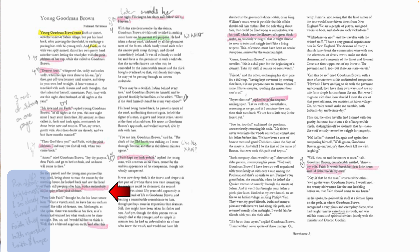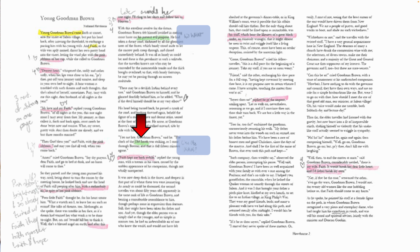She highlights in green other things — short phrases that raised questions for her. So 'his present evil purpose' — Young Goodman Brown's present evil purpose — and she wrote off to the side 'his what?' And then a little further down there's the phrase 'Old South,' which really puzzled her, so she wrote 'like the KKK?' The answer is no, that's not what Hawthorne meant, but I really like that she's engaging with the text, asking questions, and thinking about what Hawthorne meant by that phrase. This is a really good example of a student-annotated text, and if you practice this in your own reading it's really going to help you out.